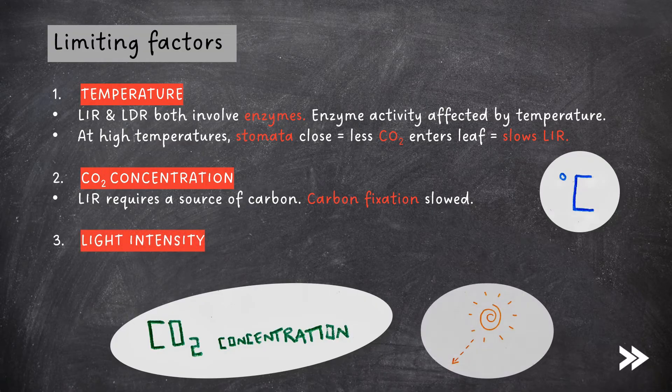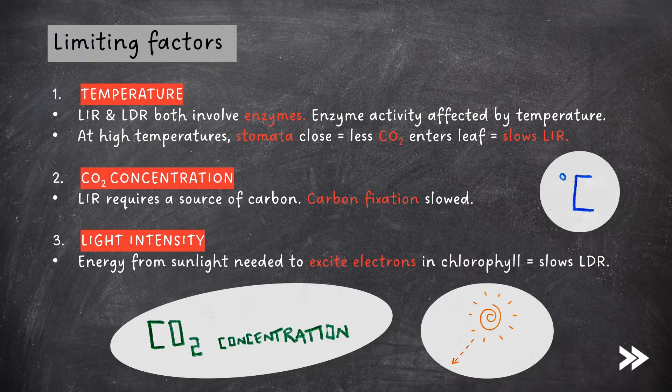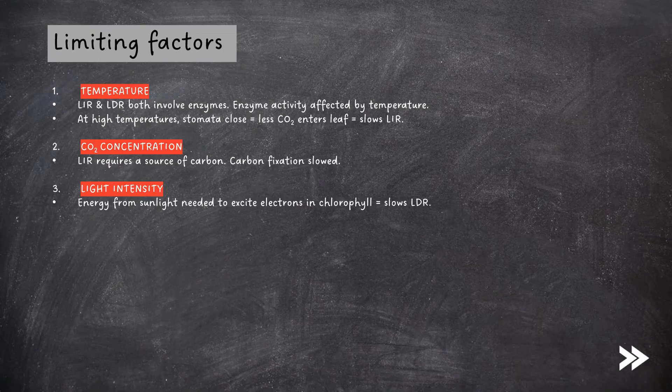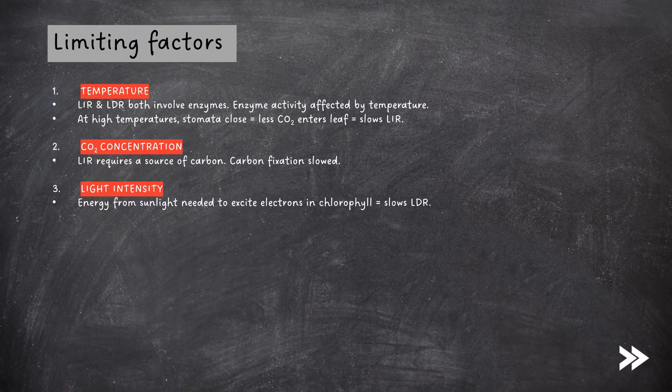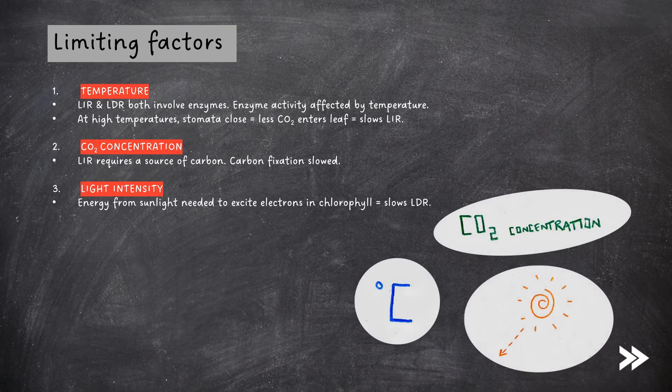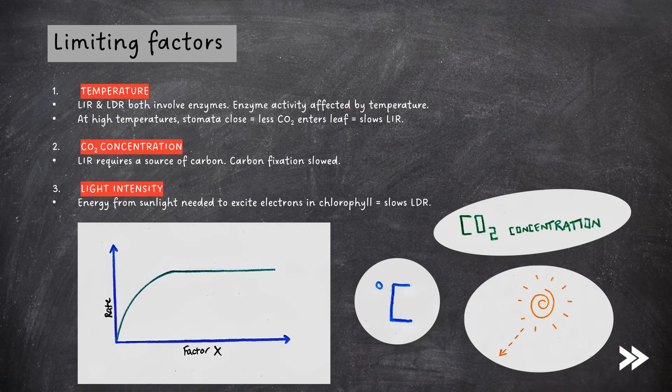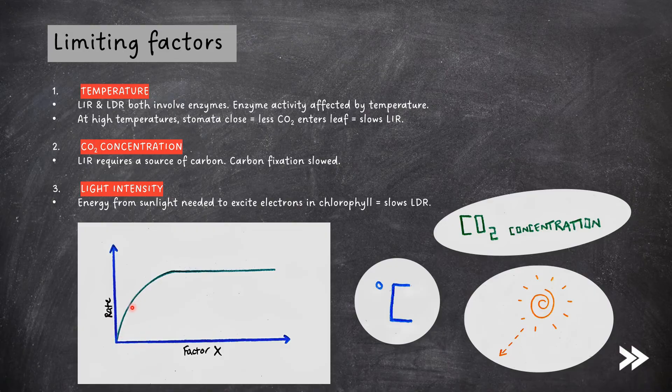Finally, light intensity also limits the rate of photosynthesis. Energy from sunlight is needed to excite electrons in the chlorophyll, therefore at low light intensities the light dependent reaction is slowed. We can conduct experiments to investigate the effect of factors that limit the rate of photosynthesis. In order to have maximum rates of photosynthesis, we ideally want all three factors of temperature, CO2 concentration and light intensity to be as high as possible. However, if we increase one of the factors whilst keeping the other two constant, we will obtain a graph just like this. And you may get shown a graph similar to this in exams. Here we can see that at first the rate of photosynthesis increases, however the rate of increase decreases and the graph levels off and the rate remains constant when another factor becomes limiting.